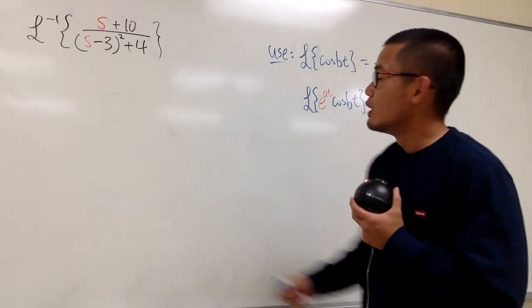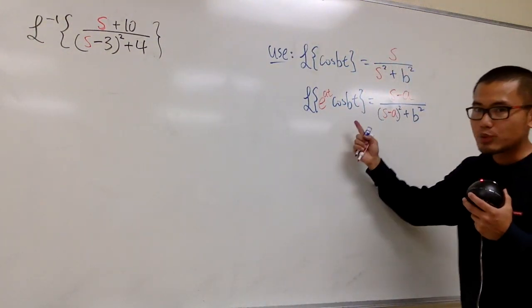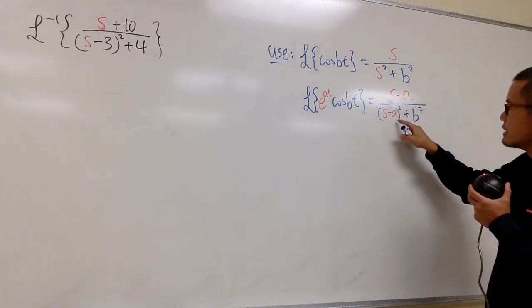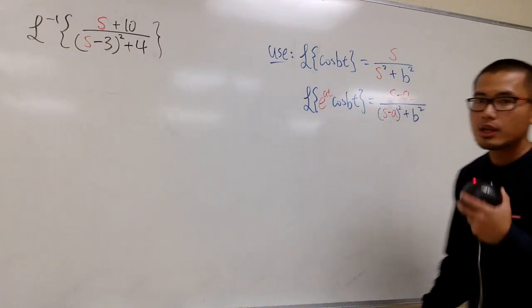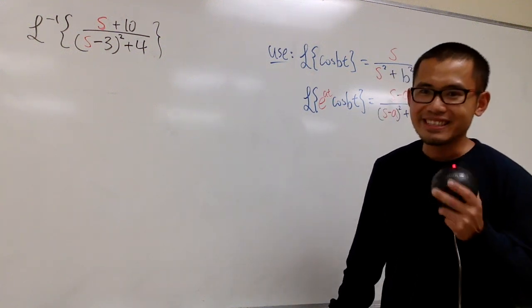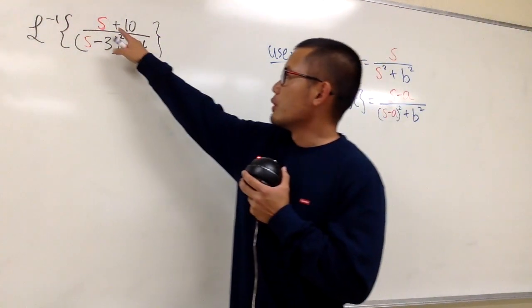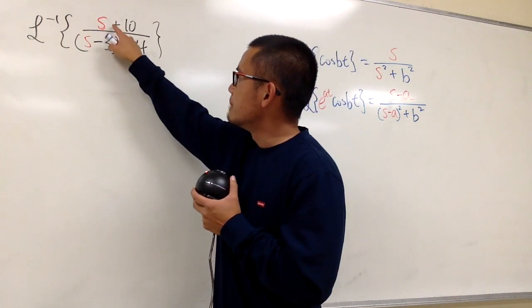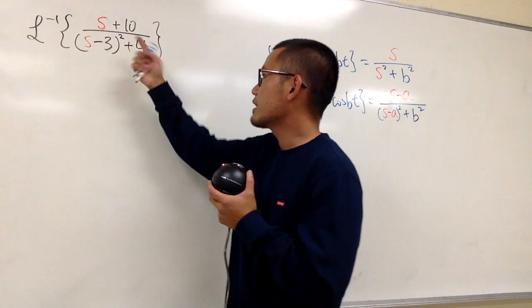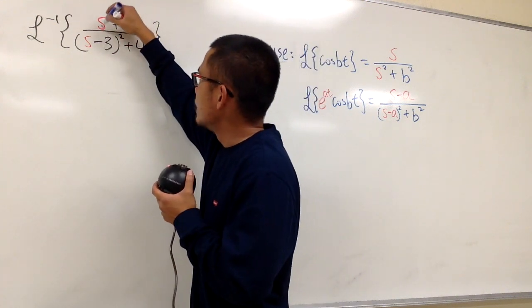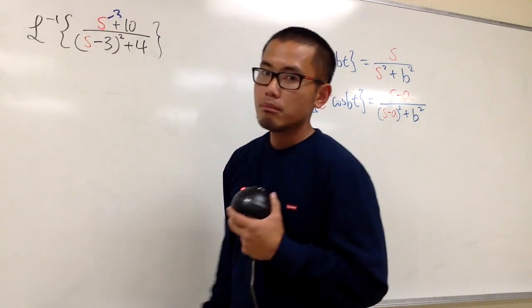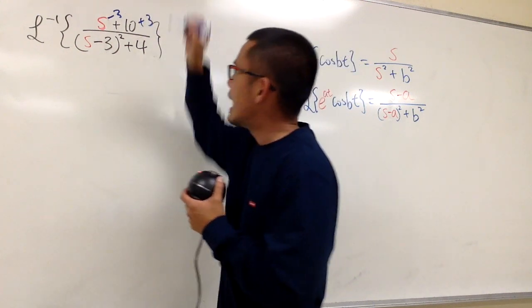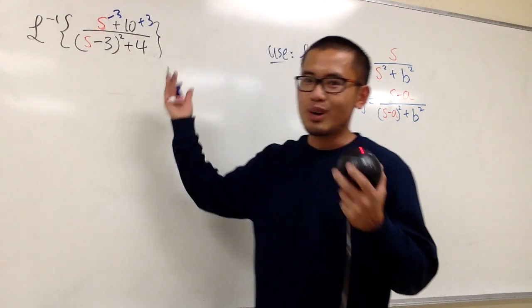In that case, what can we do? Remember, in order for us to use this formula, we must have the top, s minus a, match with this parenthesis, s minus a. Remember, you just have to make things happen. Even though this is not the same at the moment, make things happen. I really want s minus 3 on the top, so let's just do s minus 3, but I cannot do that unless I add 3 after that. So this is totally okay now.